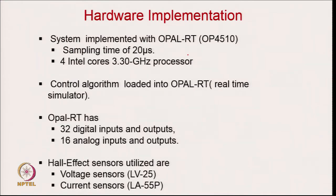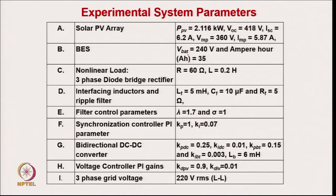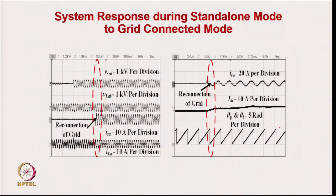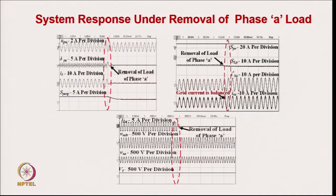For hardware implementation, an OPAL-RT processor is used for implementing the control algorithm with current sensors and voltage sensors in the practical system. In the experimental results, when grid is connected the system operates in current control mode showing grid voltage, grid current, and load current. When grid disappears, load voltage and load current are not disturbed. When the grid reappears, the system synchronizes and closes the switch — grid current starts appearing and the angle gets synchronized. Dynamics correspond to removal of one load phase: reference and actual grid current remain sinusoidal and balanced.